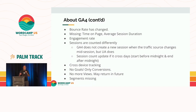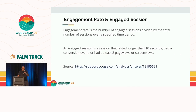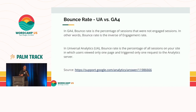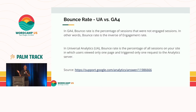I didn't like the bounce rate feature as it existed in the previous version, so I'm not missing it. There is a new thing called engagement rate. They calculate what's called an engaged session, which is a session that has lasted longer than 10 seconds, had a conversion event, or had at least two page views or screen views — because GA4 can track both app and website visits. Bounce rate in GA4 is the opposite of engagement rate. So if your engagement rate is 30%, your bounce rate is 70%.